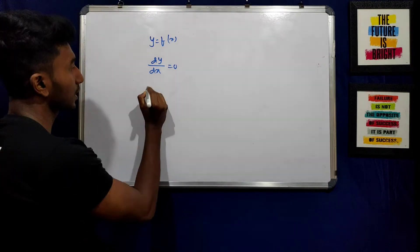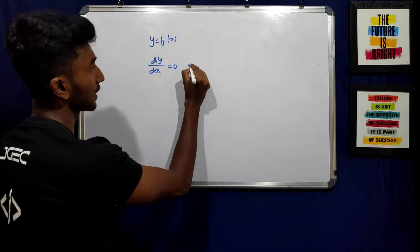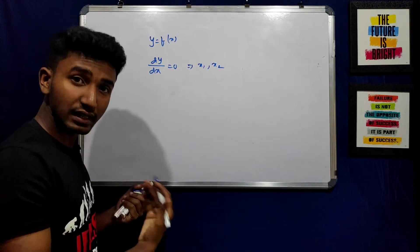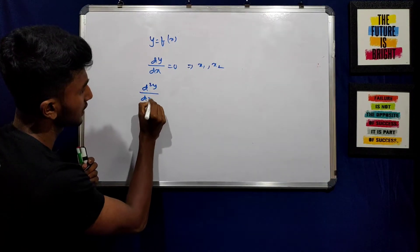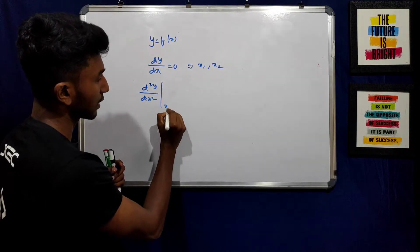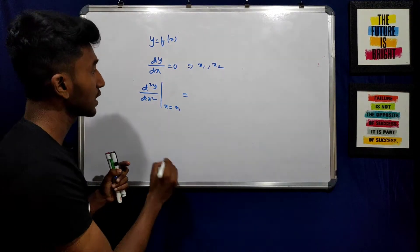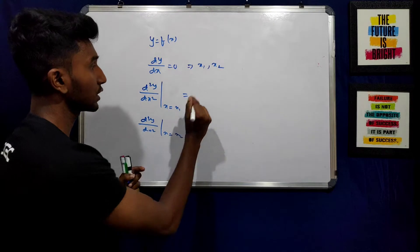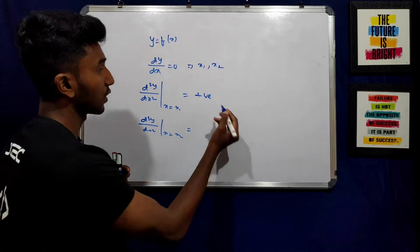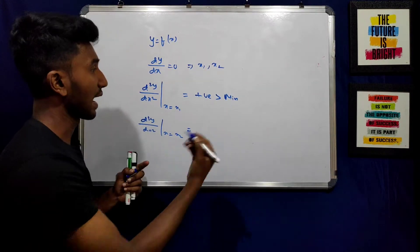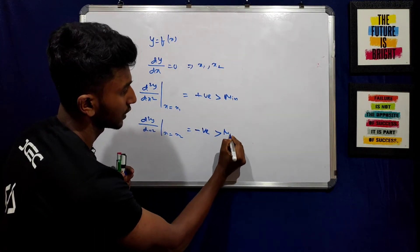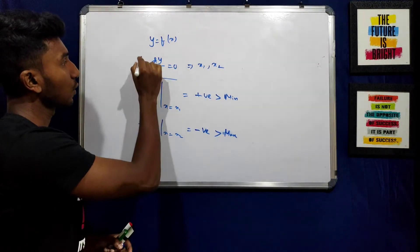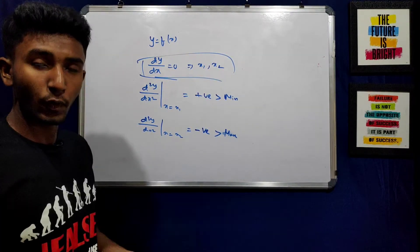To determine which it is, we find the double derivative, d²y/dx². If the double derivative at that point is positive, this means it is a minimum. If the double derivative is negative, then that point x equals x₀ is a maximum. So first we set dy/dx equals 0 to get the maximum or minimum points.